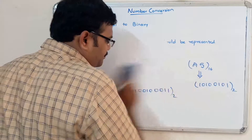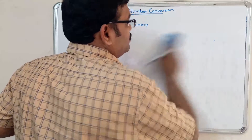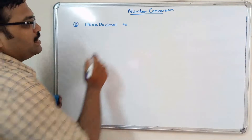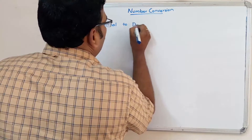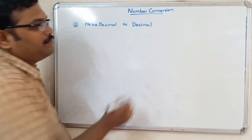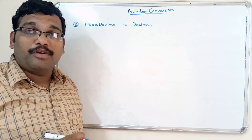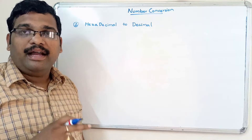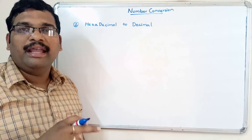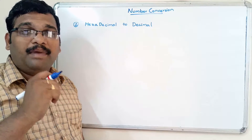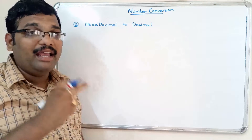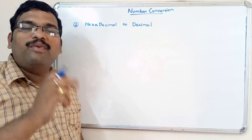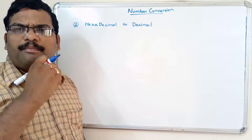Hope you understood that. The second conversion is how to convert hexadecimal to decimal. This is similar to the process we used in octal to decimal, where each positional value is multiplied by 8 to the power n. Here the base of hexadecimal is 16, so every positional value should be multiplied by 16 to the power n, where n is the position.